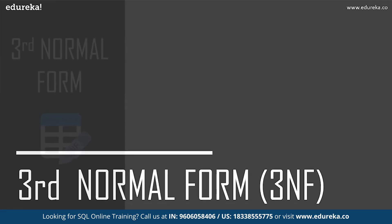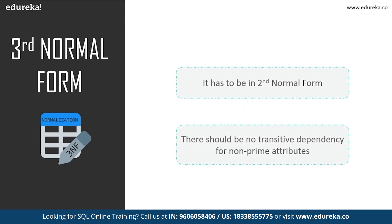The next topic is third normal form. Third normal form is used to reduce data duplication and ensure referential integrity. A table must meet two conditions: it has to be in second normal form, and no non-prime attribute should be transitively dependent on another non-prime attribute. Simply put, if C is dependent on B and B is dependent on A, then transitively C is dependent on A — this should not happen in third normal form. All non-prime attributes must depend only on the prime attributes. Third normal form was designed to eliminate undesirable data anomalies, reduce the need for restructuring over time, and make the data model more informative.